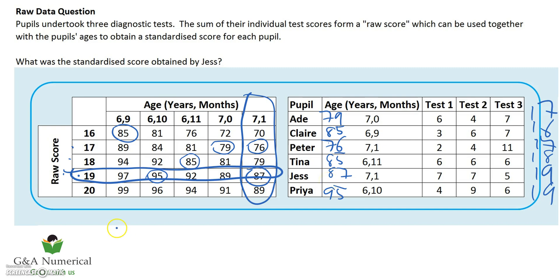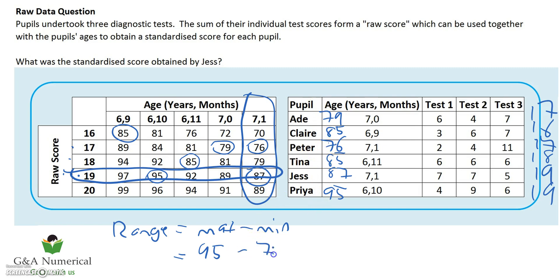Now we've got everything we need. The formula for range is maximum take away minimum. The maximum score out of those in the list was Priya at 95, and the minimum was Peter at 76. The difference between those is 19, so your answer for the range would be 19. A little bit more work, but very straightforward.